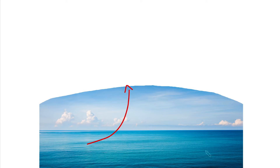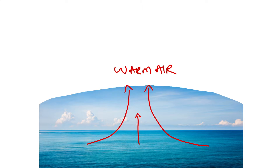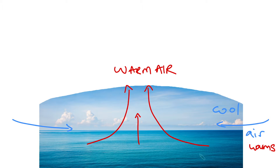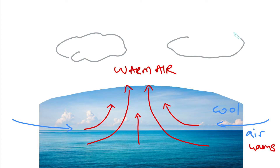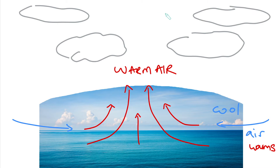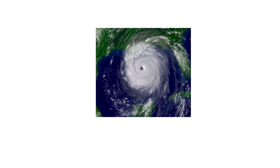Hurricanes form when warm moist air rises and is replaced by cooler air. The cooler air gets warm and then begins rising as well. With the continuous rising of this air, we begin to get huge storm clouds forming. These storm clouds eventually rotate around the center, forming an organized system.